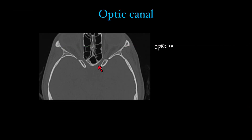Contents of the optic canal: the optic nerve and ophthalmic artery. It also has the sympathetic plexus along the ophthalmic artery.